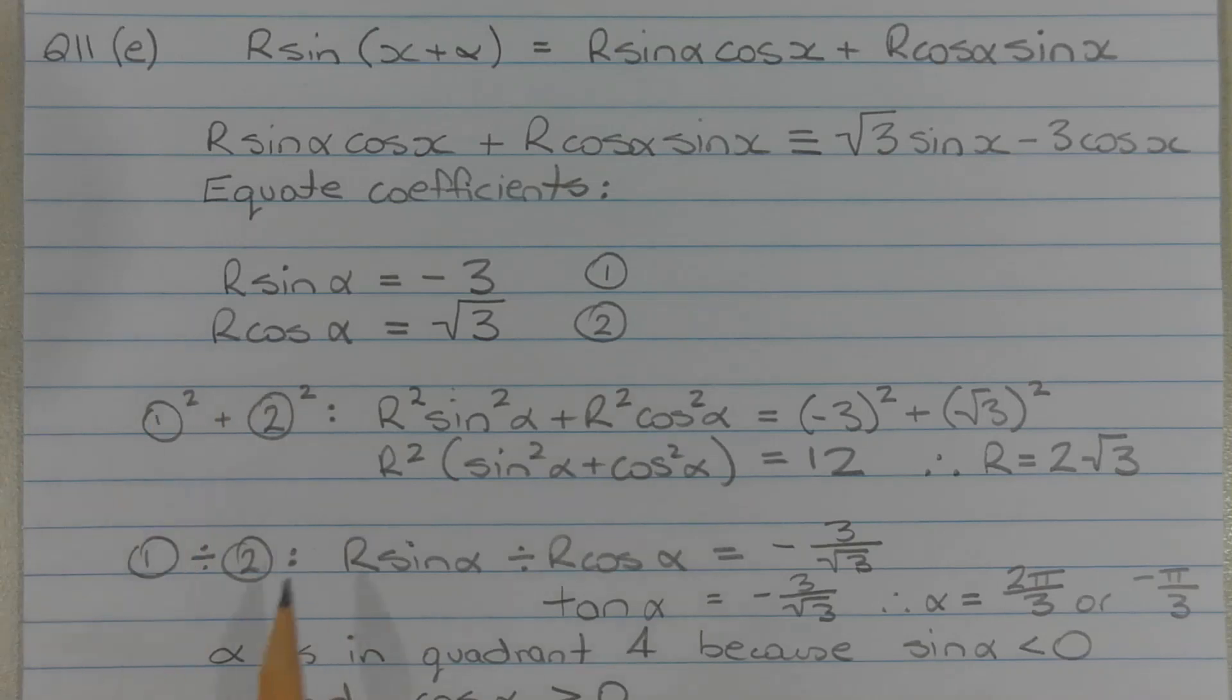To find the value of r, we square both equations and add them together. So r squared sine squared alpha plus r squared cos squared alpha is equal to negative 3 squared plus the square root of 3 squared.